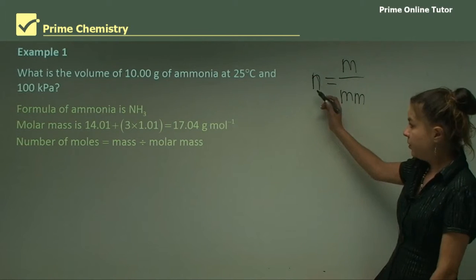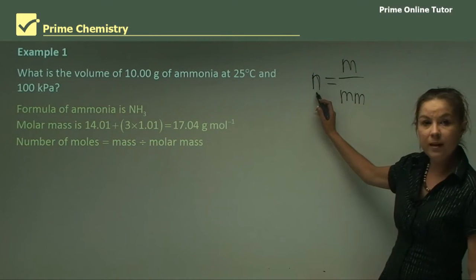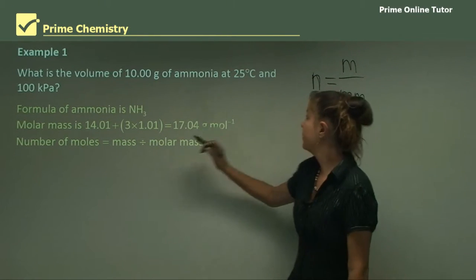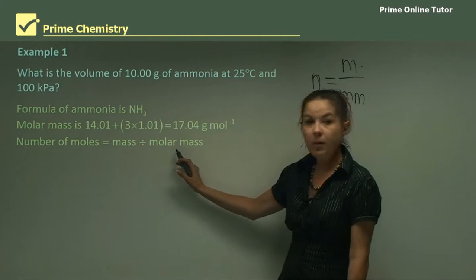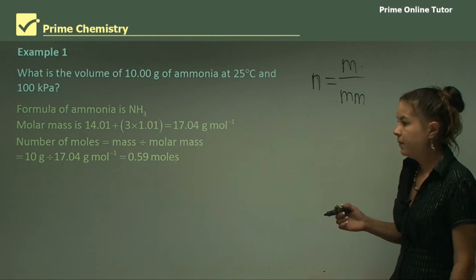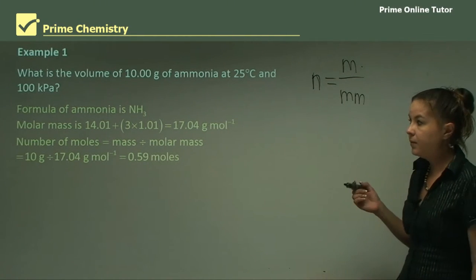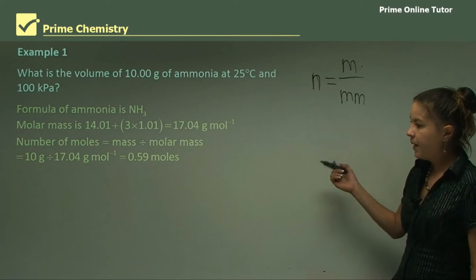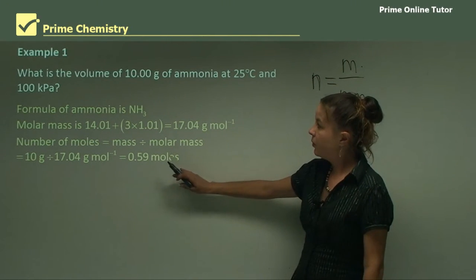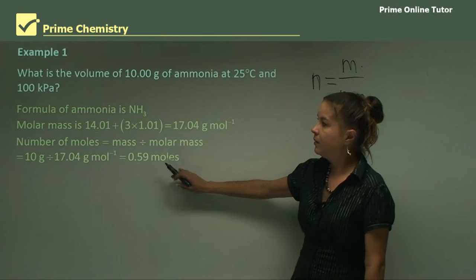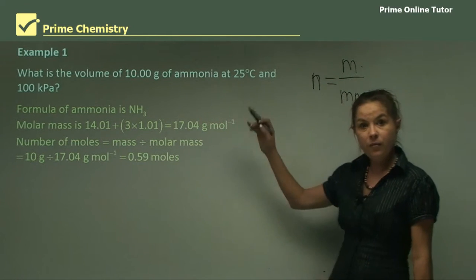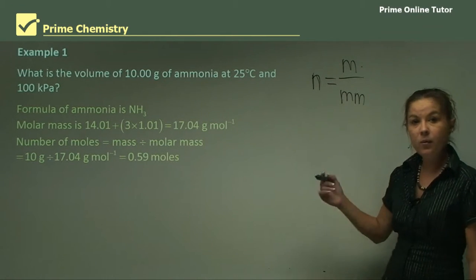So now let's use our equation. The number of moles, n, equals the mass, m, divided by the molar mass. So that's 10 divided by 17.04, and we get 0.59 moles. So now we know the moles of ammonia. We need to move on and find the volume. So we need a second equation now.